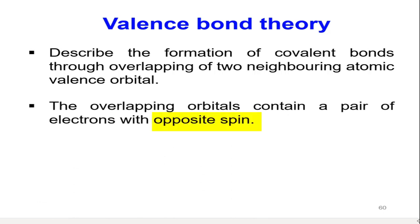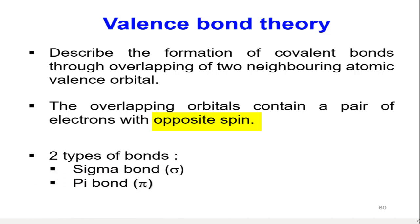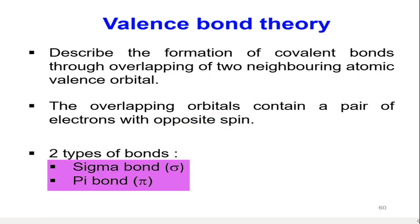Basically, there are two types of covalent bonds: sigma bonds and pi bonds, depending on how the orbitals overlap. Next, we are going to discuss the formation of both sigma and pi bonds.